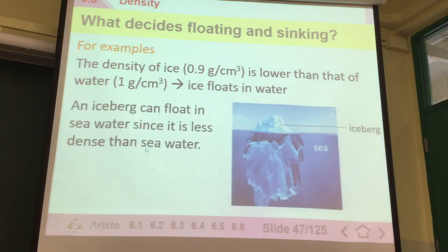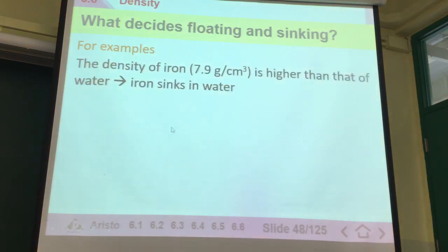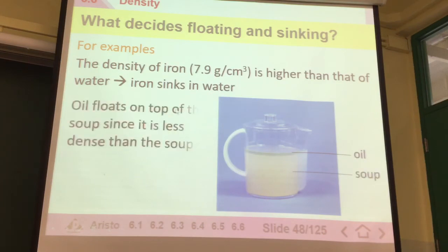Sea water again is around 1.03 in terms of density. It's similar to 1. The iceberg will float on top of water. For iron, it's 7.9. Compared to water it's 1, and it will sink in water. The next example is oil. Oil has a lower density than water, so the soup. That's why it will separate the oil from the soup this way.